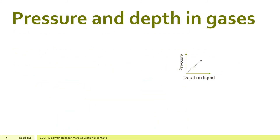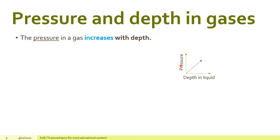Pressure and depth in gases. The pressure in a gas increases with depth. As you can see in the diagram, as you go deeper in the ocean, the pressure increases. For example, a bubble at a shallow level in the ocean becomes smaller as it goes deeper, because there is more pressure. The pressure increases with depth.